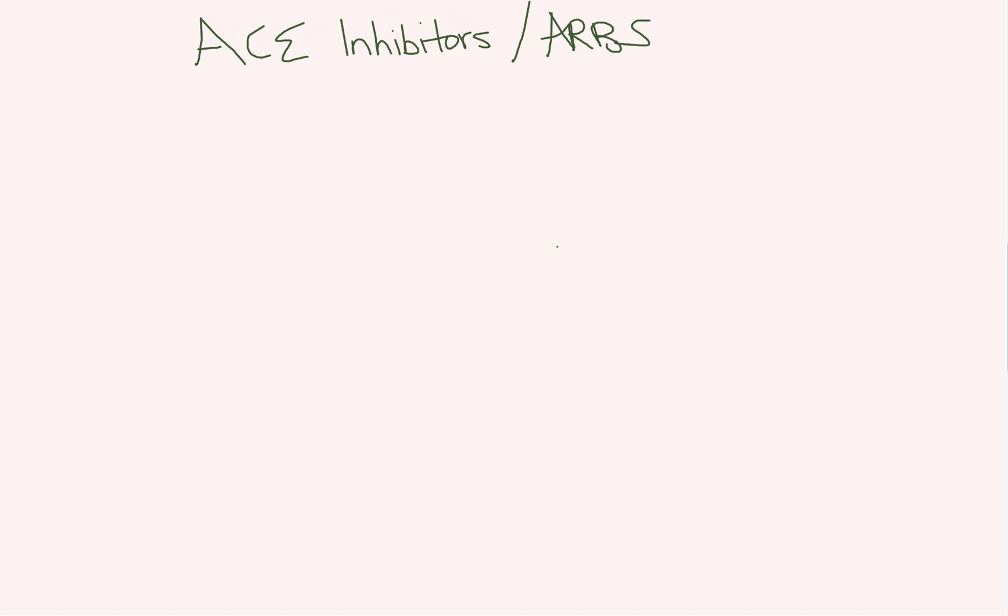So today I'm going to be talking about ACE inhibitors and angiotensin receptor blockers, ACEs and ARBs. I'm going to start out with some memory tricks of how to remember which drugs are ACEs, which drugs are ARBs, and what those drugs do as well as some side effects. And then I'm going to give you the background on why this actually works the way it does.